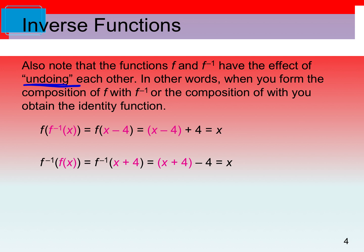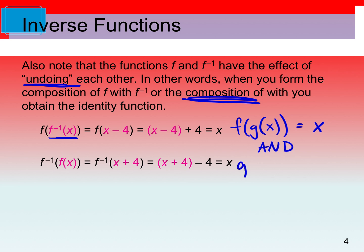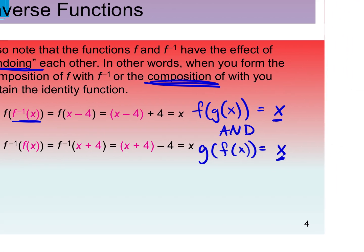One way that we can verify if two functions are inverses of each other is we can take the composition of those. Let's say instead of calling it f inverse, I'll call it g — let's say g is the inverse of f. If we take f of g and it simplifies to x, and we take g of f and the composition also simplifies to x, then f and g are inverses of each other.